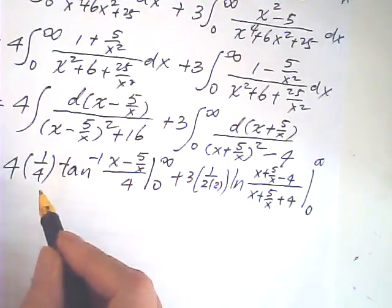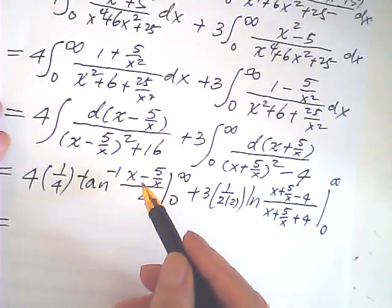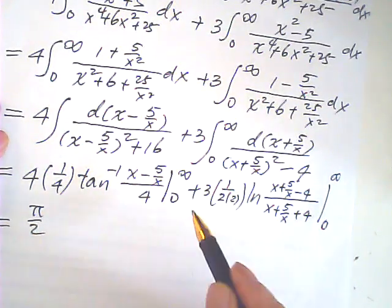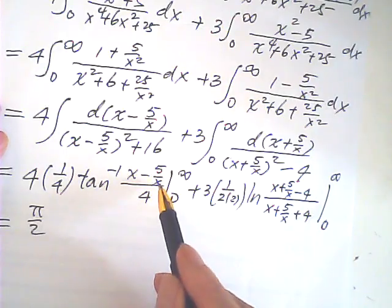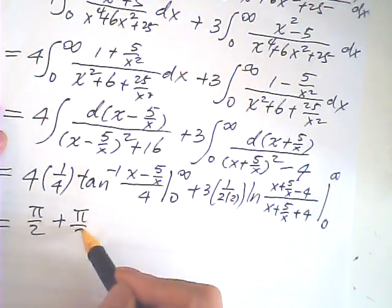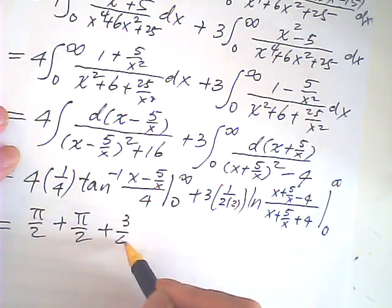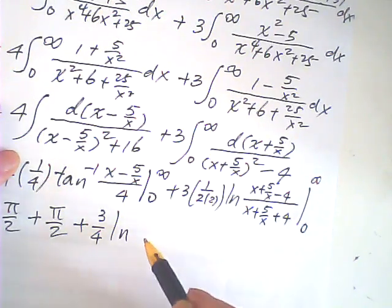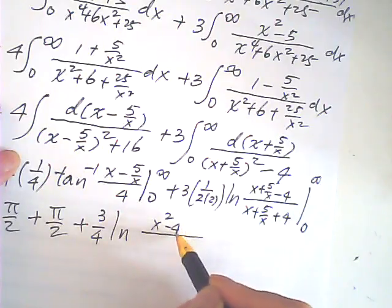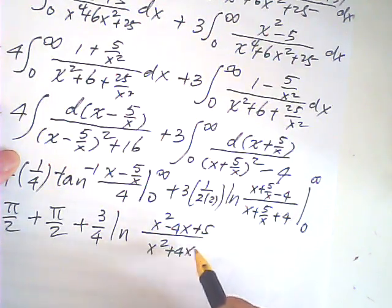This one is 1. As x approaches infinity, this is 0. Therefore, this infinity becomes π over 2. When x is approaching infinity, this will be negative infinity, so it becomes plus again. This one is equal to 3 over 4, natural log, we can times x, x squared minus 4x plus 5 over x squared plus 4x plus 5.